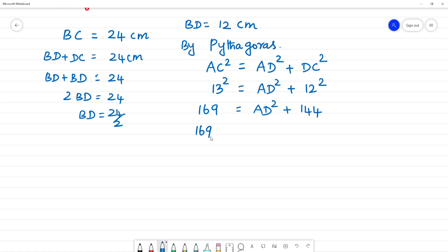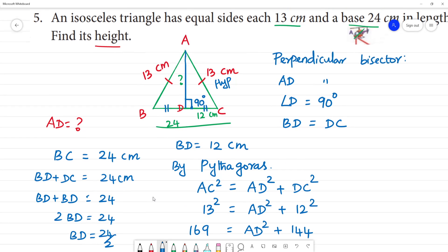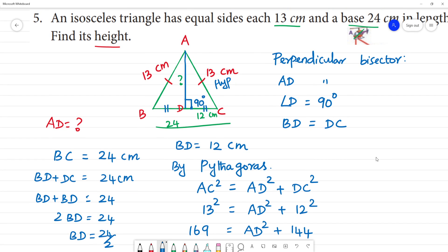So 169 minus 144 equal to AD square. 25 equal to AD square. Root 25 is 5. Final answer, AD is 5 cm. The height is 5 cm. Clear.